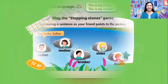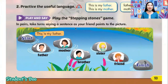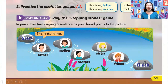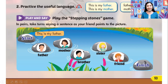Play and say. Play the stepping stones game. In pairs, take turns saying a sentence as your friend points to the picture. This is the starting point and this is the finishing point. Example — you will use the useful language: 'This is my father.' And continue until the end. If you can make a video yourself, I would be grateful to get it and give you a score.